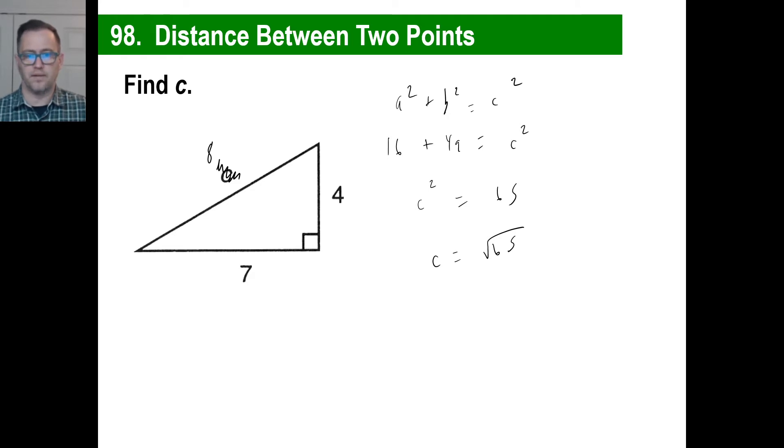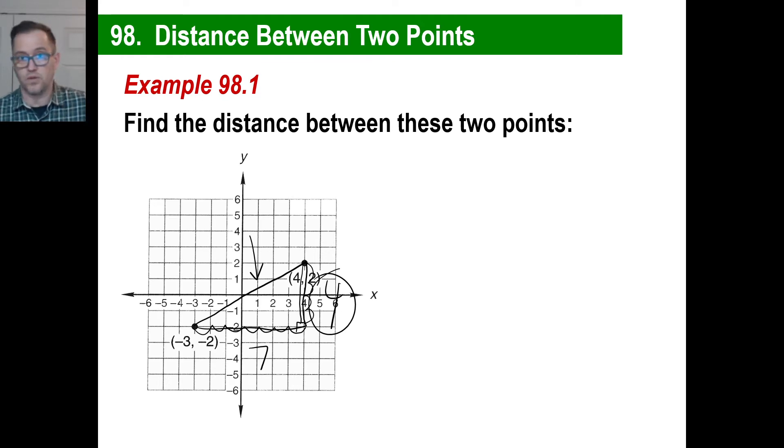And that's going to be the square root of 65, which is a little more than 8. And that's how we do it, finding the distance between two points.